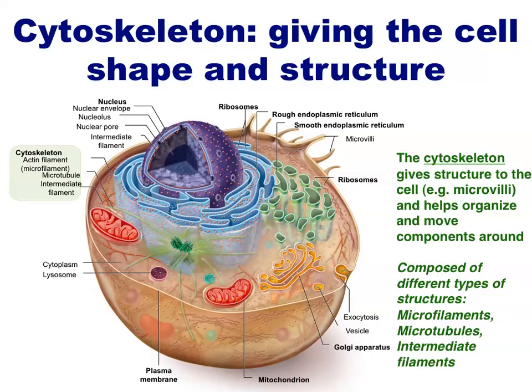These vesicles and other organelles are moved about the cell on protein fibers or cables known as the cytoskeleton. The cytoskeleton gives the cell shape and structure, and also allows for complex internal organization. This cytoskeleton is composed of long, interlocking protein fibers. There are primarily three types: microfilaments, microtubules, and intermediate filaments. Each has certain characteristics which make them particularly suited for certain functions.